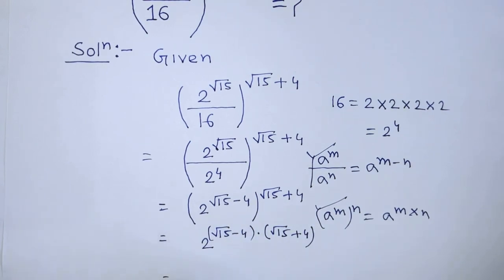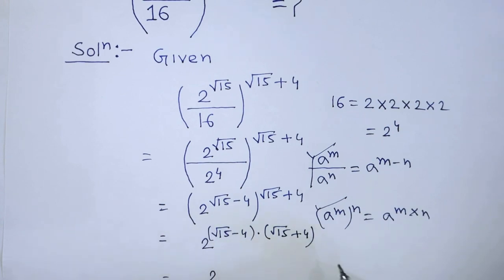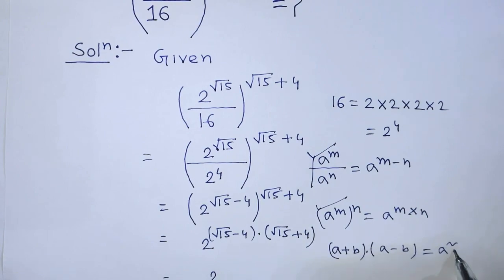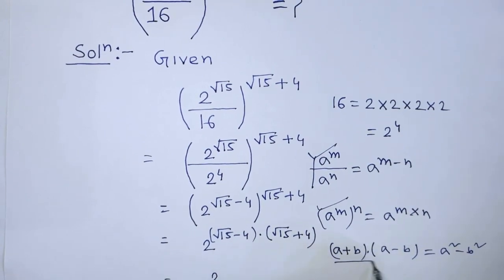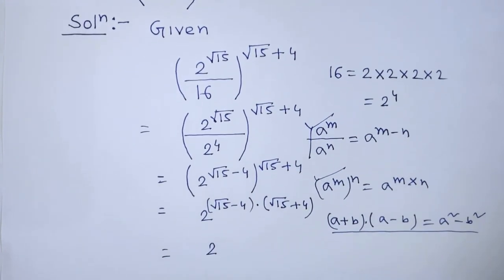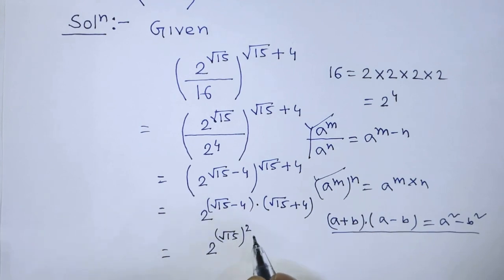We write the same base 2, and to simplify the power, we apply the formula: a minus b times a plus b equals a squared minus b squared. According to this formula, we write in the place of power: the square root of 15, whole to the power 2, minus 4 to the power 2.